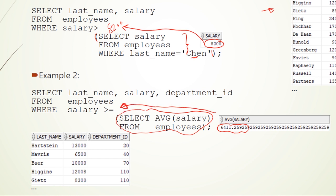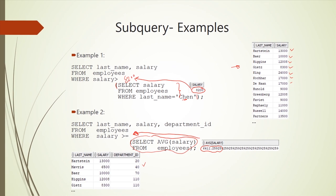That average salary value is used by the outer query to return the final result: SELECT last_name, salary, department_id FROM employees WHERE salary >= 6411. It returns those employees whose salary meets that condition. In this lesson we learned about subqueries and how to use them. I hope this video was informative — thank you for watching.